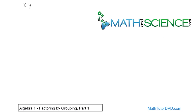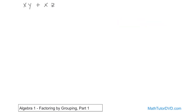We start with the expression x times y plus x times z, and the goal is to factor it. What you basically do is look at both terms and try to find something common. You see an x here and an x here — that's really the only thing common — so you can pull that x out because it's common to both.